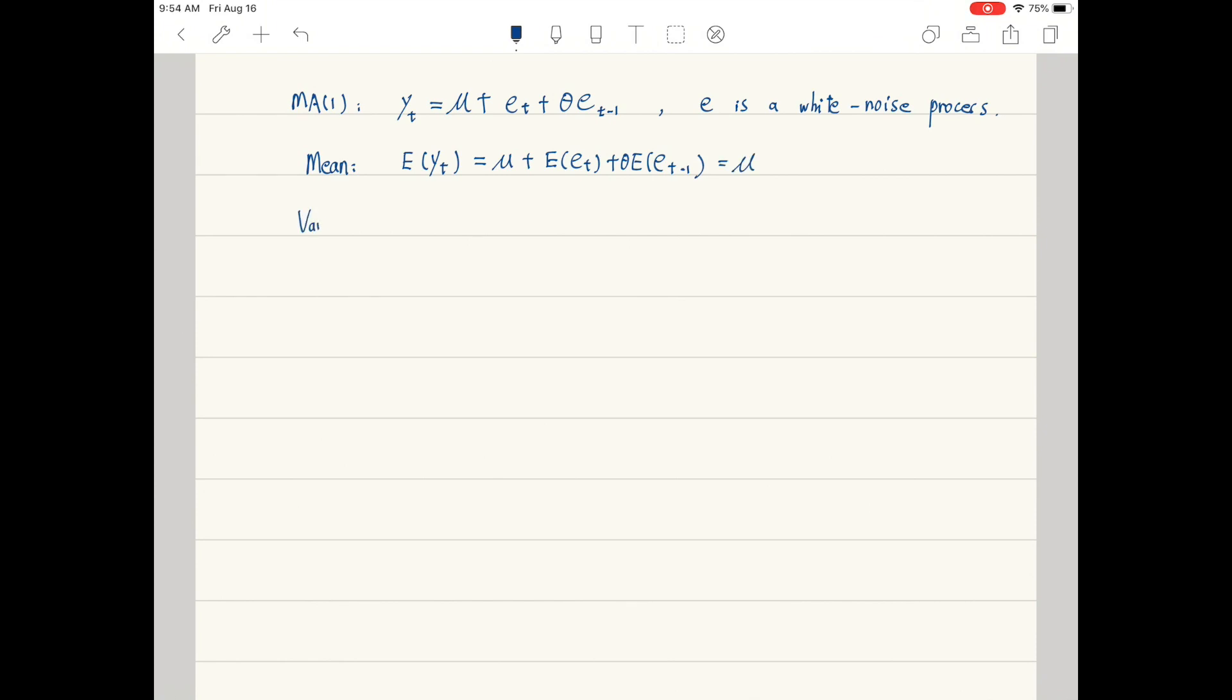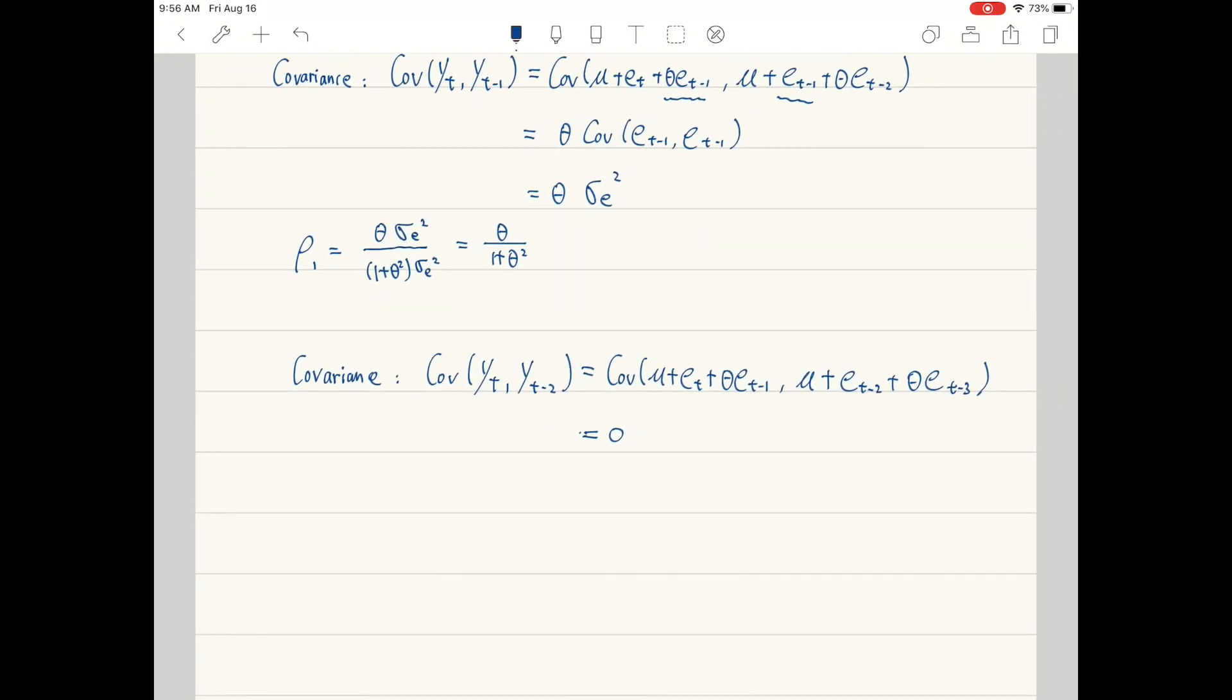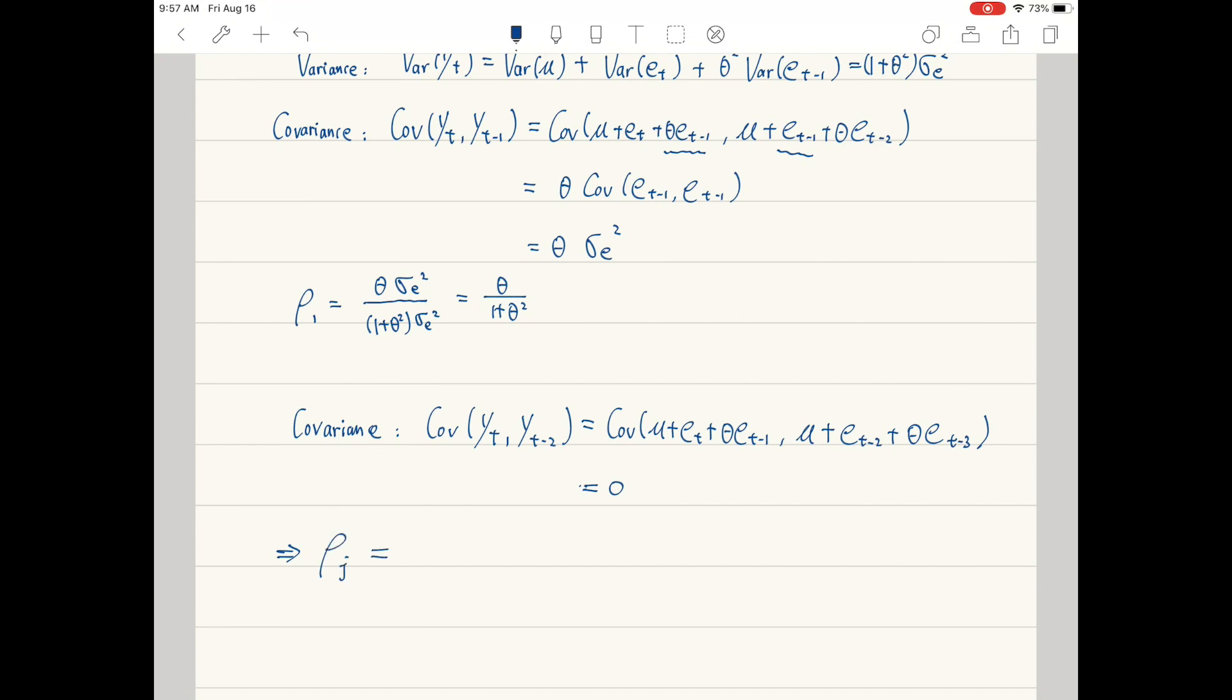For the first order moving average process, its mean, variance, and covariance are independent of time. So the moving average process is Covariance Stationary. The autocorrelation is not a function of time either.